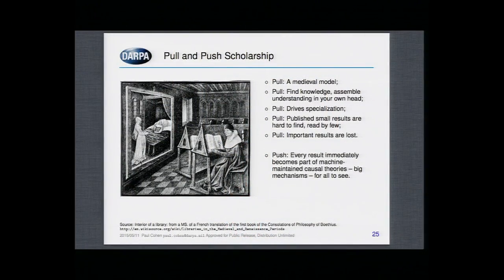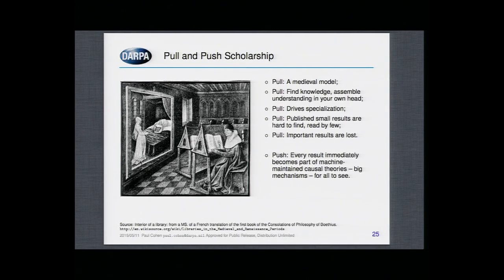I think the real contribution of Big Mechanism is to change how knowledge is organized and communicated. Today we work under a thoroughly medieval model — a pull model in which we go into our monastic cells, nowadays with a computer, and pull knowledge into our heads, trying to synthesize it. The problem is you don't read any faster now than you did as an undergraduate, or than the monks did 400 years ago, and yet the amount of knowledge is increasing exponentially — which means you're getting less and less of what's relevant. There are 20,000 proteins within two hops of RAS. There's no way you can understand everything going on, even if you read all day.